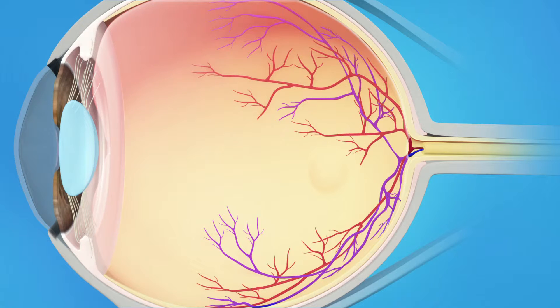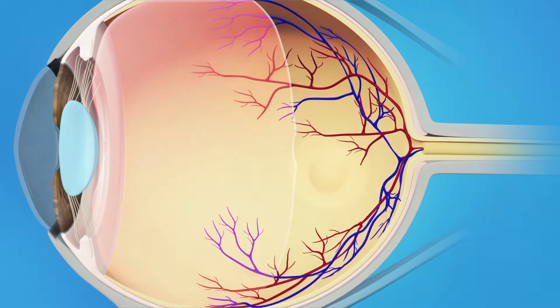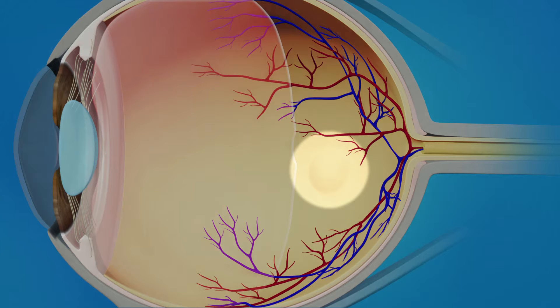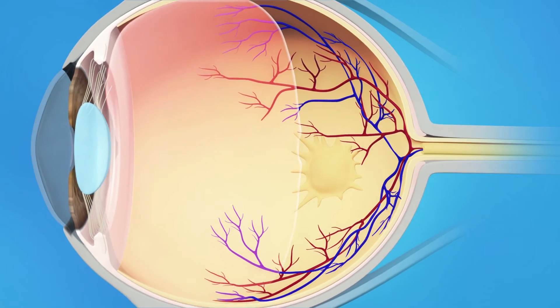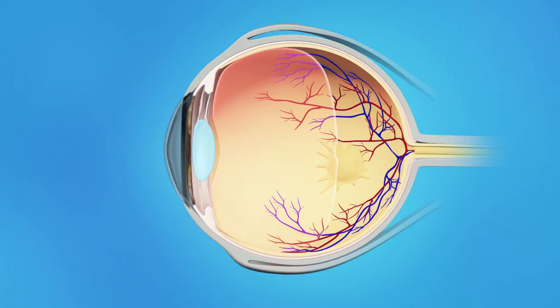In some cases, however, as the vitreous pulls away, scar tissue may develop on the macula. Sometimes the scar tissue can warp and contract, causing the retina to wrinkle or bulge.